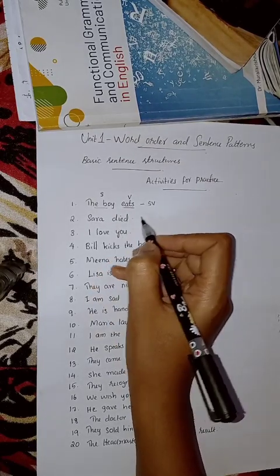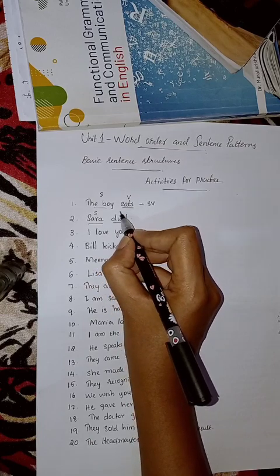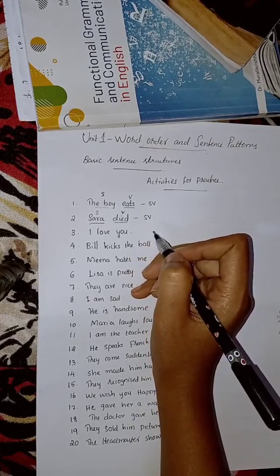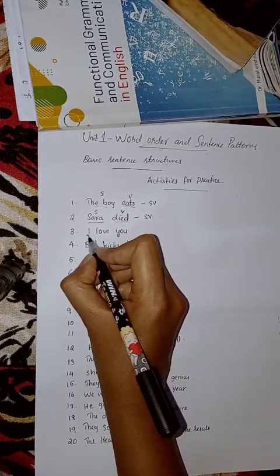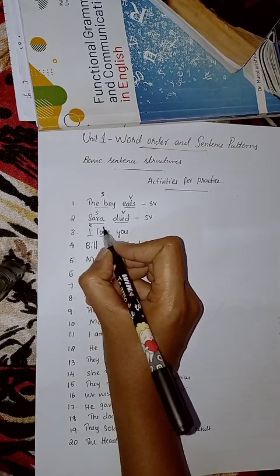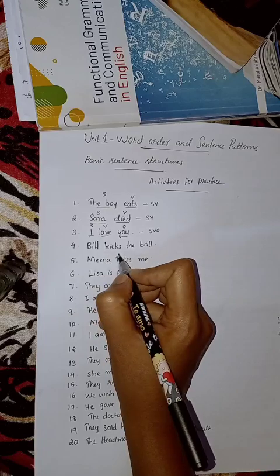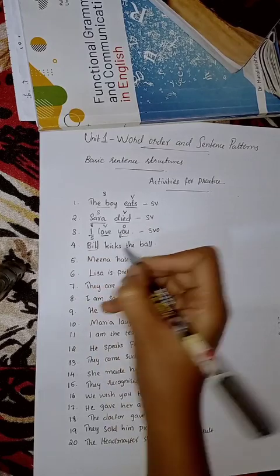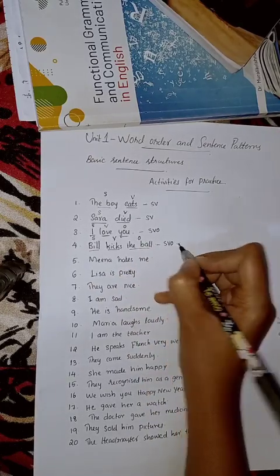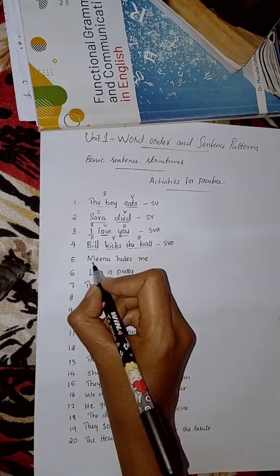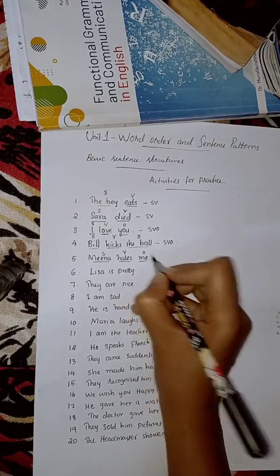Next: 'I love you.' The subject is 'I,' the verb is 'love,' and the object is 'you.' Next: 'Bill kicks the ball.' 'Bill' is the subject, 'kicks' is the verb, and 'the ball' is the object. Next: 'Mina hates me.' 'Mina' is the subject, 'hates' is the verb, and 'me' is the object. That is the SVO pattern.